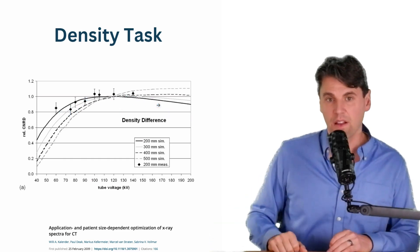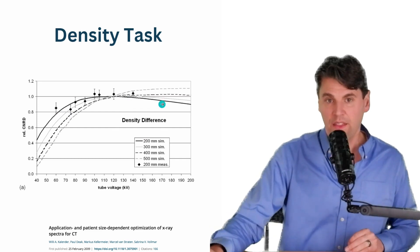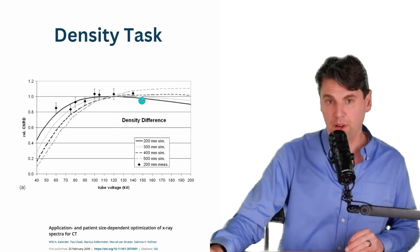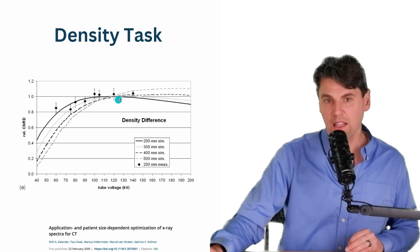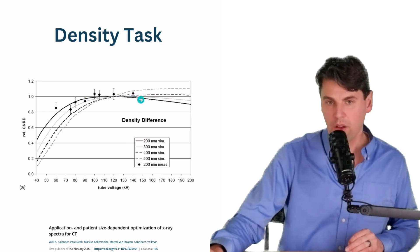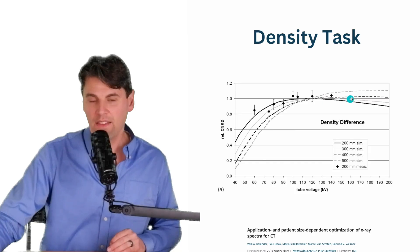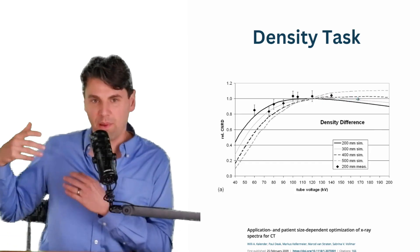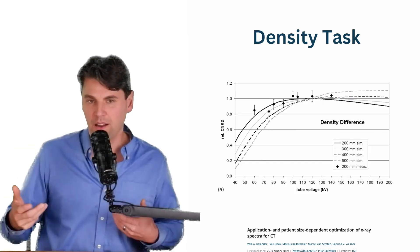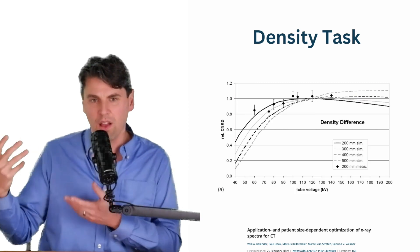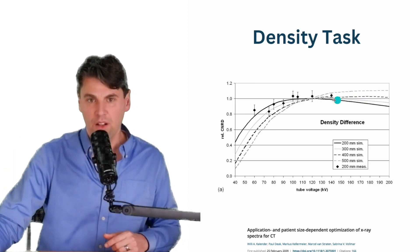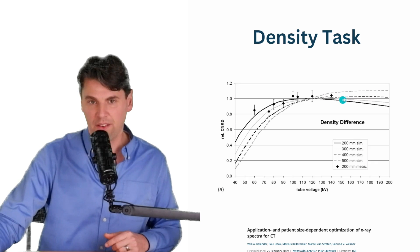What you can see here is for the density task, that most of the curves are pretty flat here. So there's not a really strong relationship. And a KVP somewhere around 120 KVP actually gives a pretty reasonable value for all these different body sizes. And this is why for a long time we've been using 120 KVP on our CT scanners as kind of a default, because it gives a relatively good trade-off for this standard imaging.